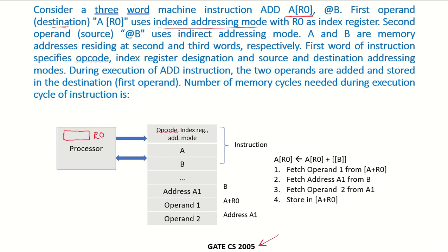For indexed addressing mode, you can check my earlier lectures. But here it specifies that the location of the operand is given by A plus the contents of register R0. So R0 is the index register. Whatever is the value A, we add it to the contents of R0, and that gives us the memory location.